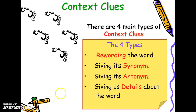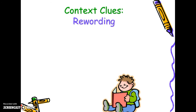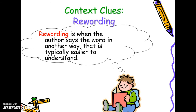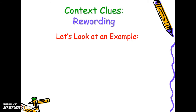There are four main types, and these are the things you'll be asked to look for in your vocabulary tests: rewording the meaning of the word, using a synonym, using an antonym, or giving you details. Rewording is when the author says the word in another way that is typically easier for you to understand.